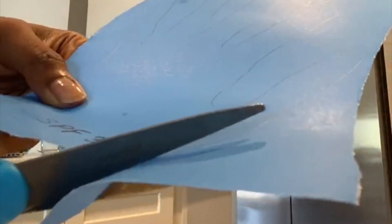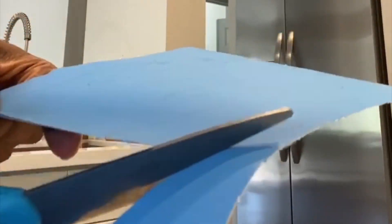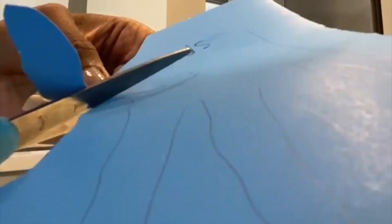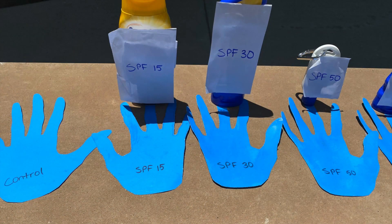Once dry, with the supervision of an adult, carefully cut out your sunscreen creation. Let your sunscreen painting sit out in the sun for approximately three hours.